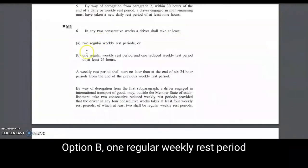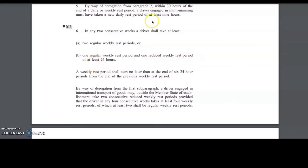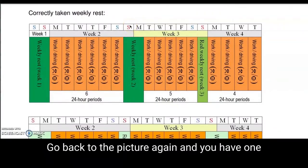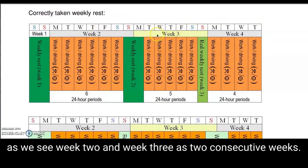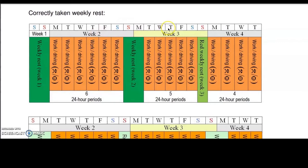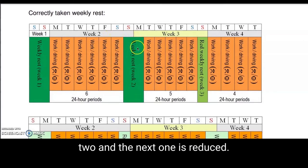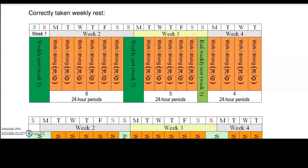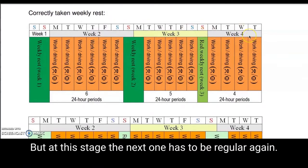Option B: one regular weekly rest period and one reduced weekly rest period. Looking at the picture, week two and week three as two consecutive weeks — we have one regular break in week two and the next one is reduced. So that's legal, you can do that. But at this stage, the next one has to be regular again.